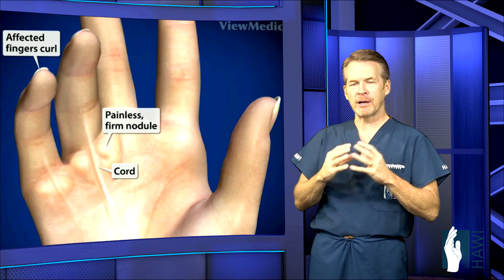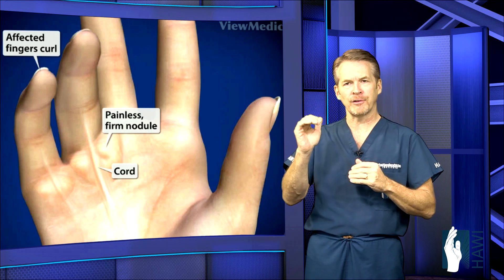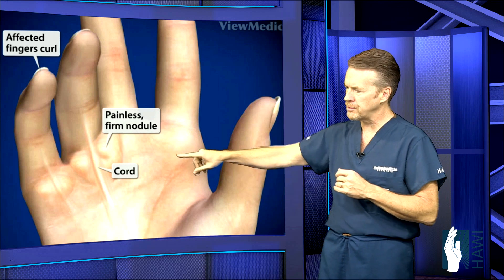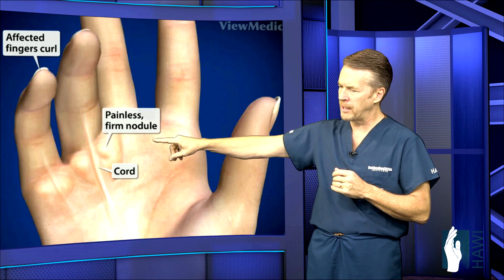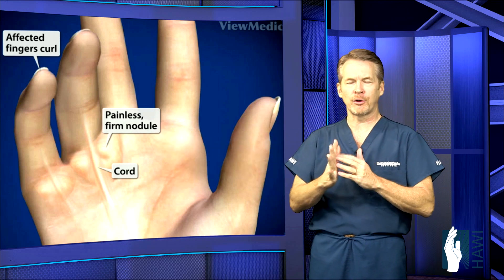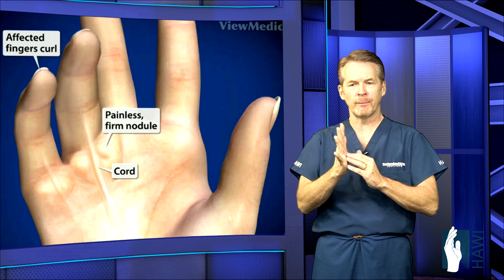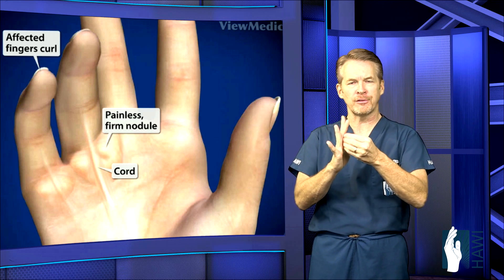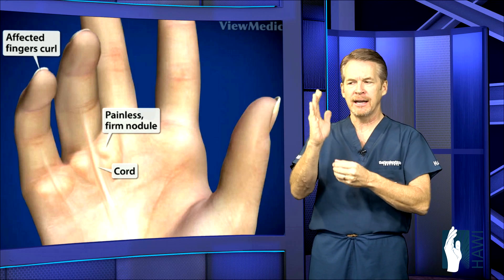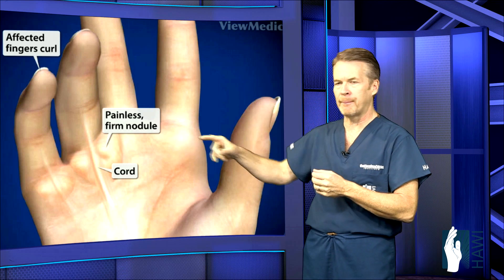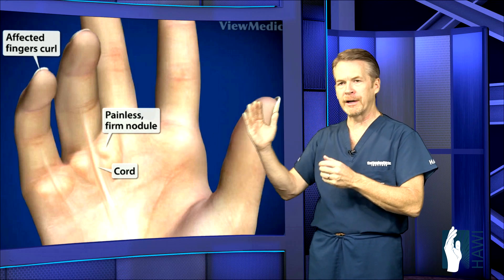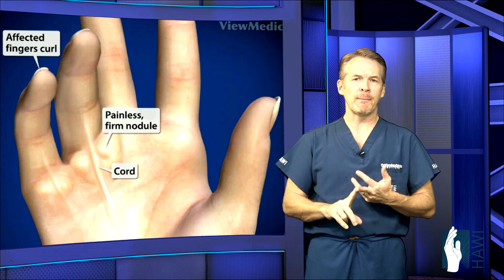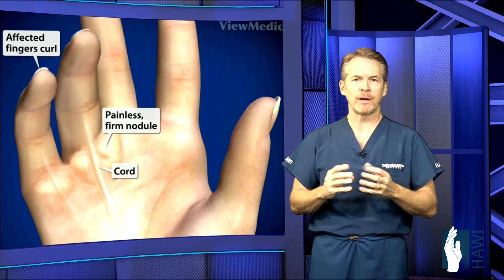Where it starts to become a problem is when it starts limiting the ability to extend the fingers. Initially, painless nodules develop, but then you start getting these cords that form. Out into the fingers, the fascia starts to thicken, and as it does — as you can see here on the little finger — it starts to curl the fingers down. It's more common in the little and ring fingers.